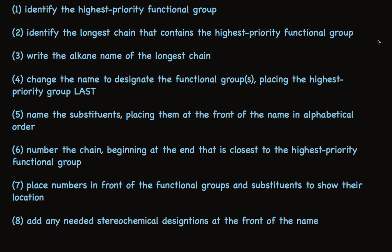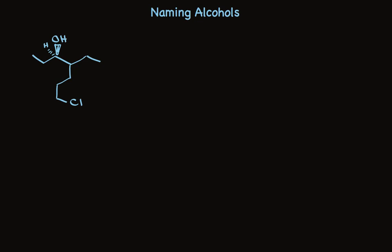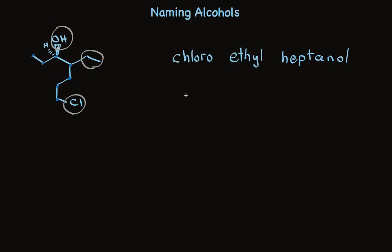This set of rules will let you name any compound. Take a look at this structure. The hydroxyl group is the highest priority functional group, so we'll locate the longest chain that contains it. We can find a seven-carbon chain, so this compound is a heptane — only we change the name to heptanol to indicate the alcohol. We'll find the substituents attached: a chloro group and an ethyl group, placed in front of heptanol in alphabetical order. We number the chain from the end closest to the hydroxyl group. This is 3-heptanol, with an ethyl group on carbon 4 and the chloro group on carbon 7.